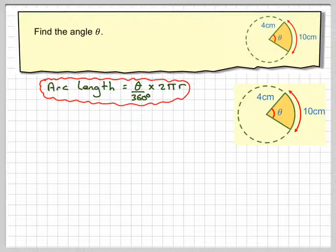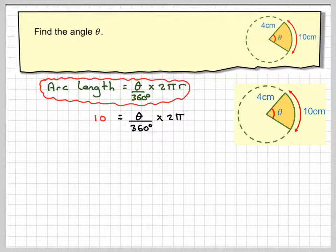So the arc length is 10, so write down 10 is equal to the angle theta over 360 times 2 pi times the radius which is 4.